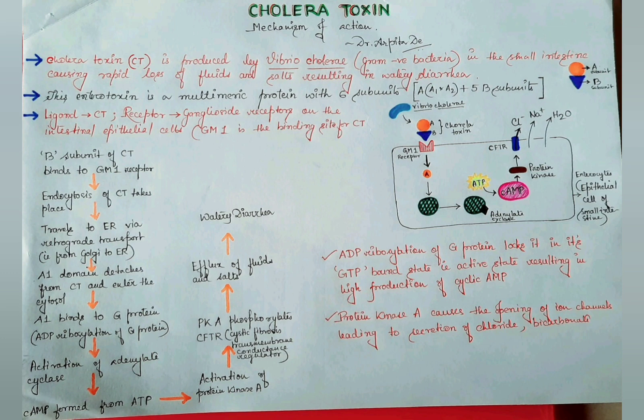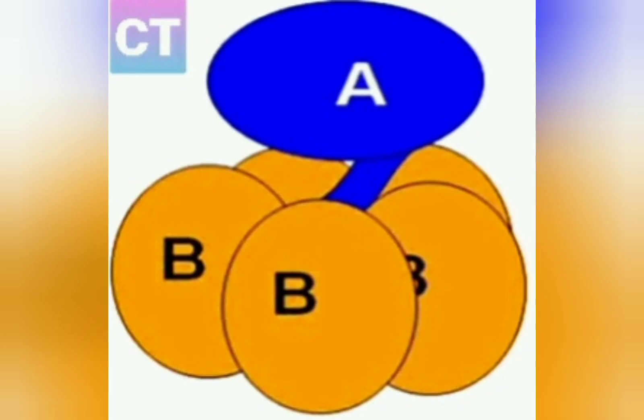The toxin it produces is known as cholera toxin, and it is an enterotoxin that causes terrible poisoning, resulting in watery diarrhea. This enterotoxin is a multimeric protein with six subunits: one A subunit and five B subunits. The A subunit also has two parts to it — A1 and A2.